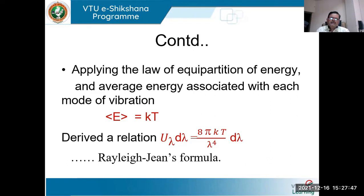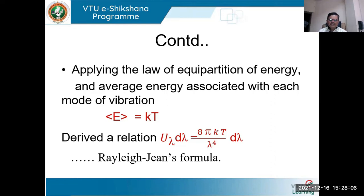Keeping this result, Rayleigh obtained an expression for energy density: U_λ dλ = 8πKT / λ⁴ dλ. This is most popularly known as the Rayleigh-Jeans formula, which utilizes the concept of equipartition of energy. Now we have to test the validity of this Rayleigh-Jeans law.